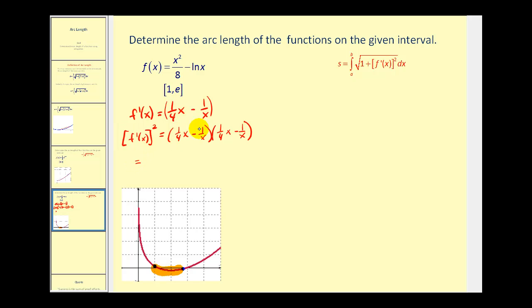So the first product will be one-fourth x times one-fourth x. That'll be one-sixteenth x squared. Now, one-fourth x times negative one over x. The x's will simplify out and we're left with negative one-fourth. And then we have another negative one-fourth from this product, so that's going to be minus one-half.